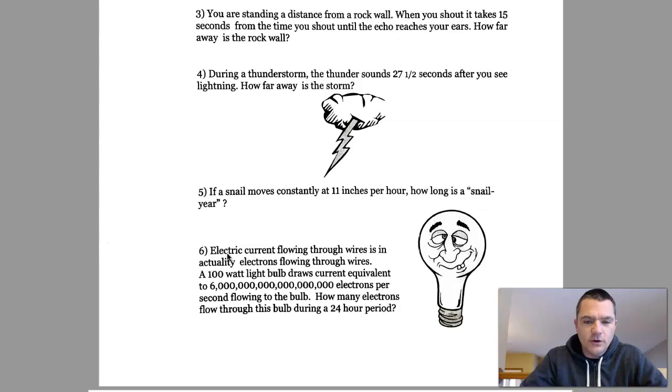Electric current flowing through wires is in actuality electrons flowing through wires. A 100-watt light bulb draws current equivalent to 6 quintillion electrons per second flowing to the bulb.